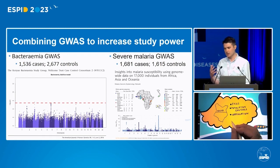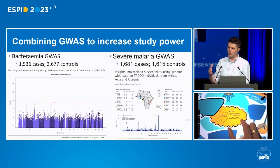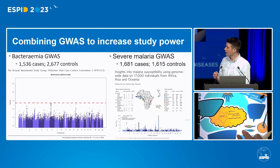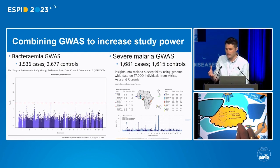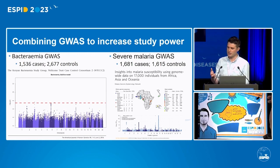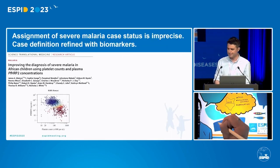One of the things we've been thinking about over a number of years was how we might be able to integrate genome-wide association study datasets from the same population in Kilifi with other invasive infections. The obvious starting point seemed to be to use the MalariaGen genome-wide association study of severe malaria in the same population.